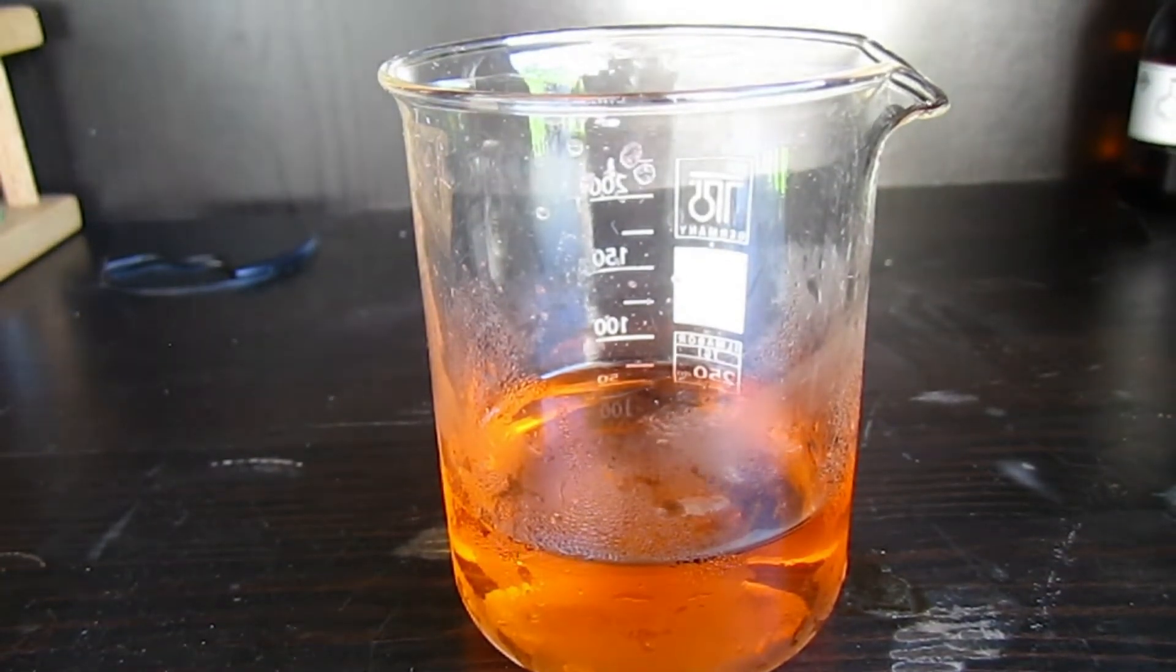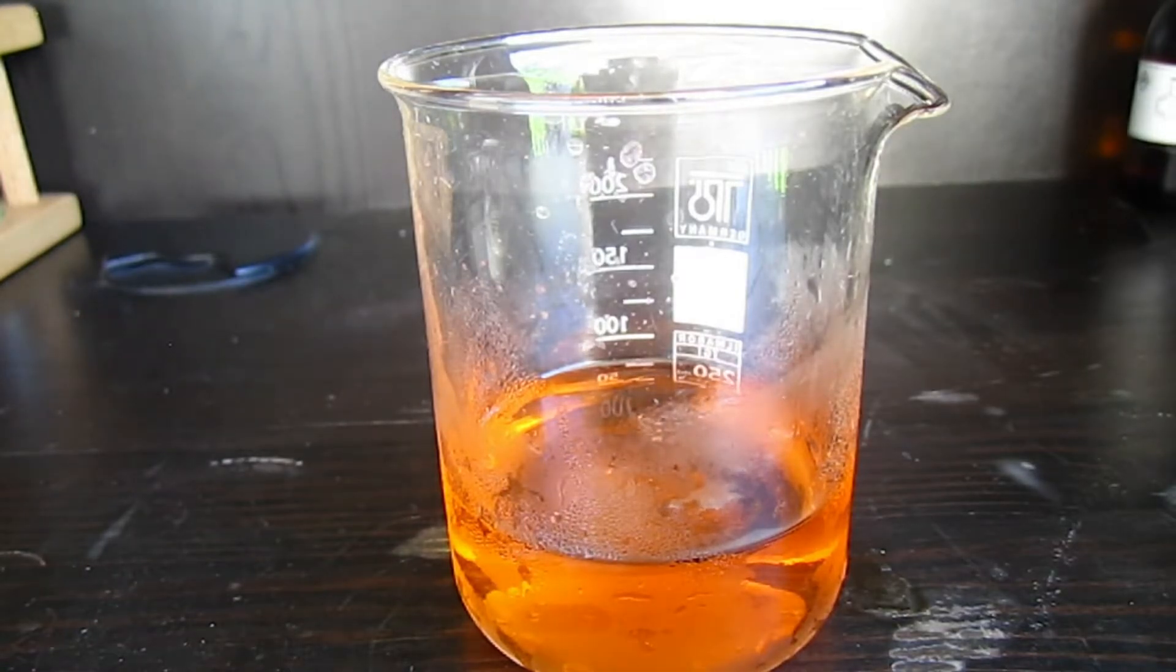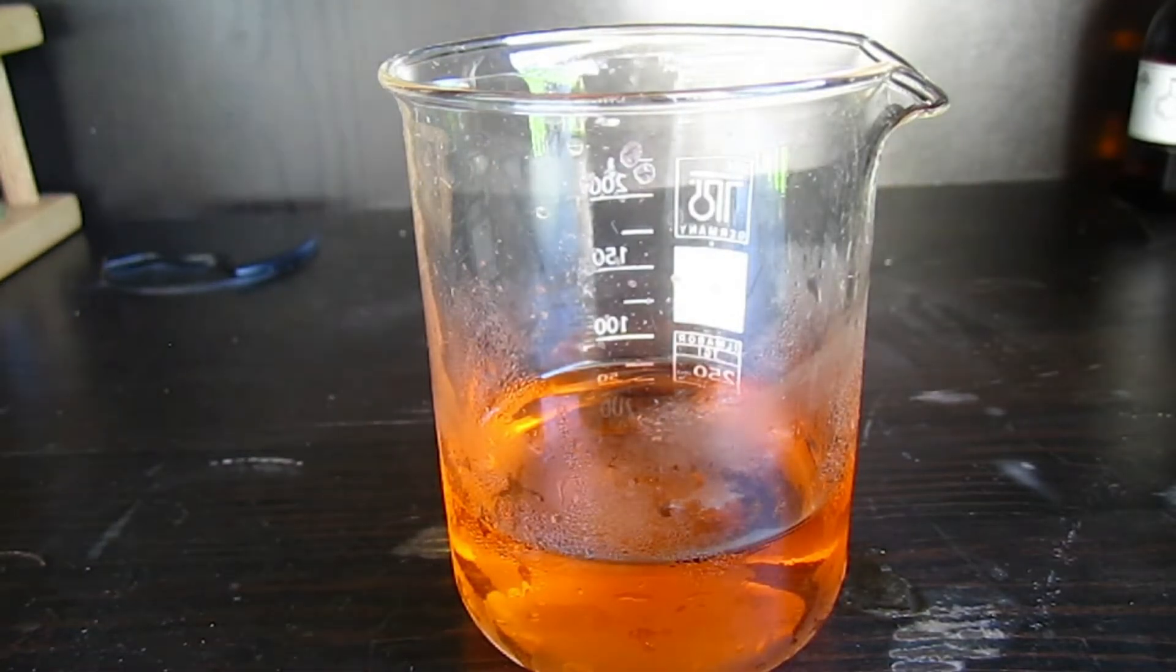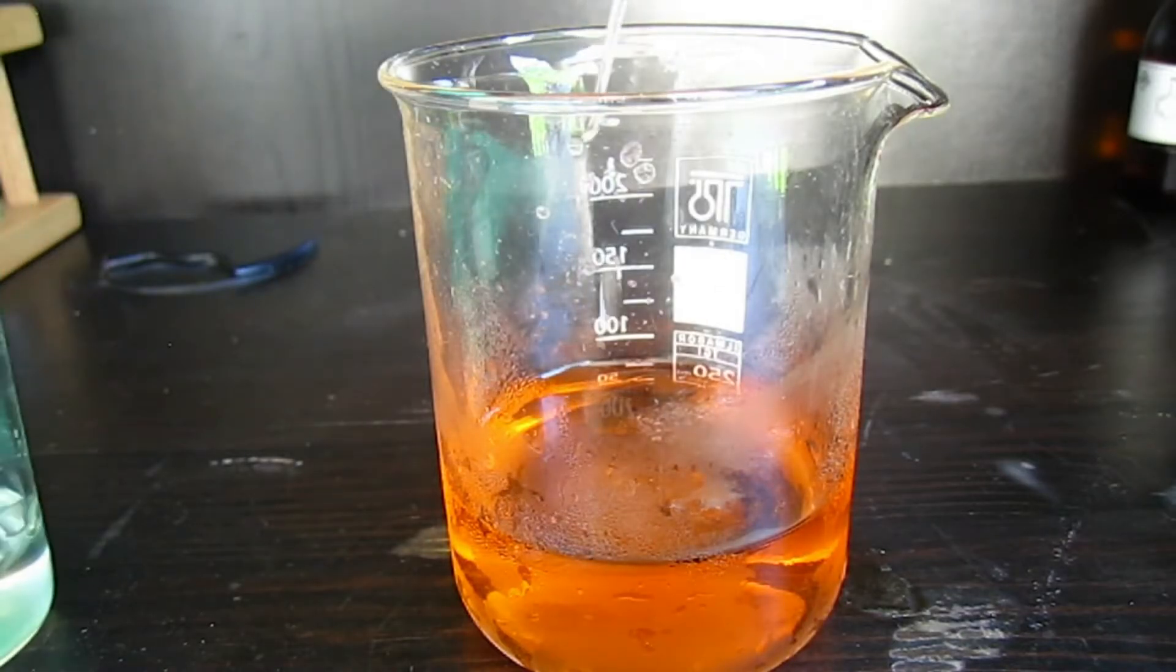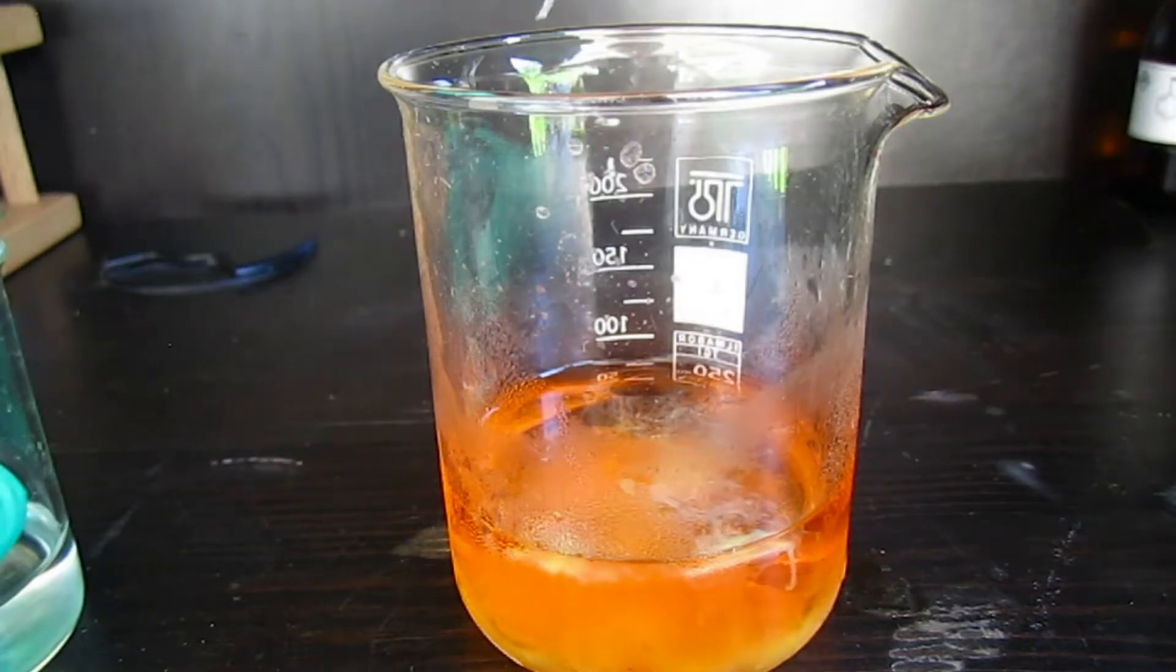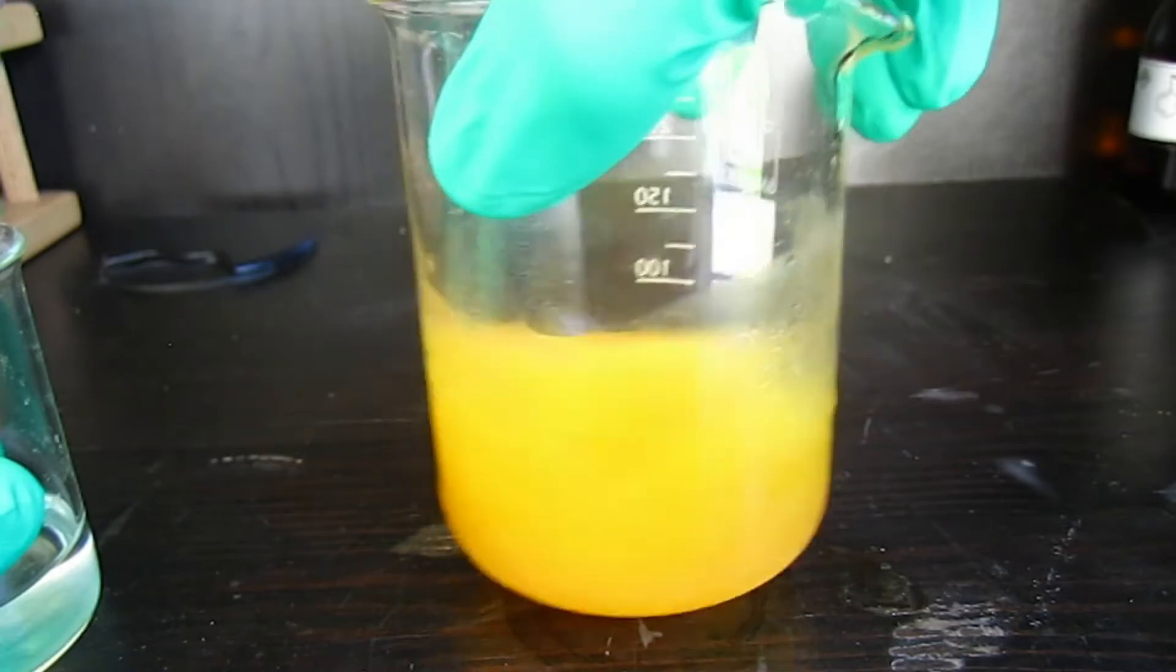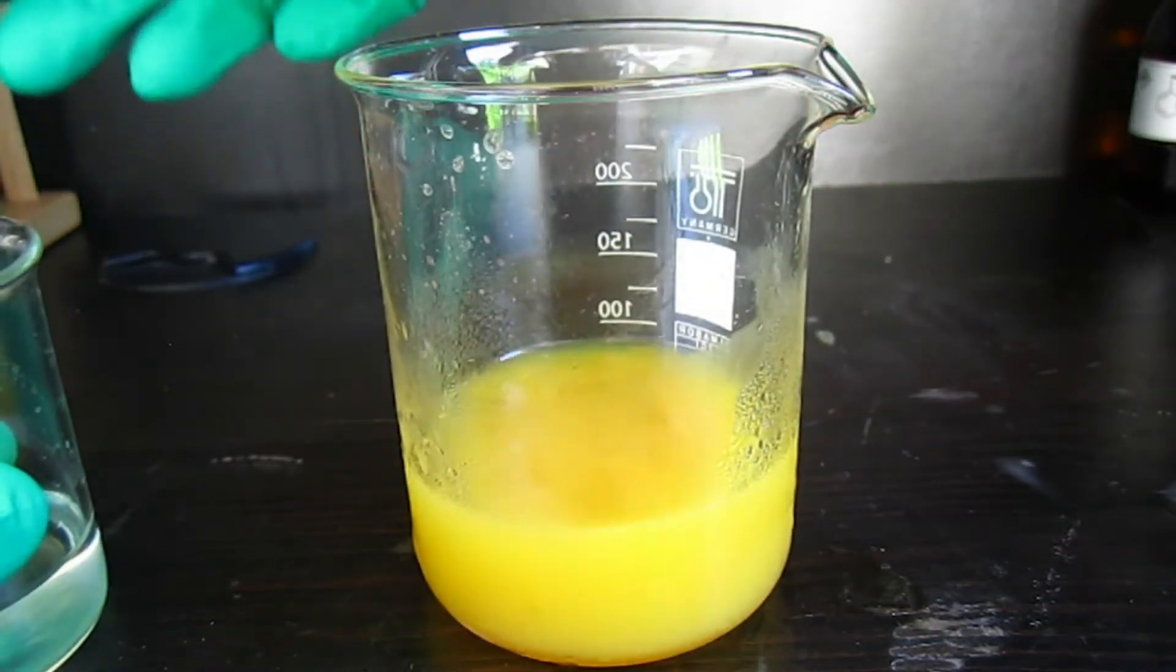So now we're going to add the sodium acetate solution over about five minutes. As you can see, there is a yellow precipitate forming and that's our product, diazobenzene.